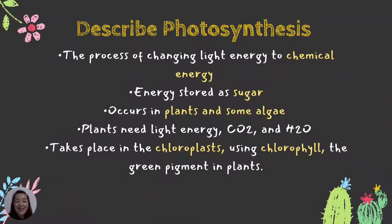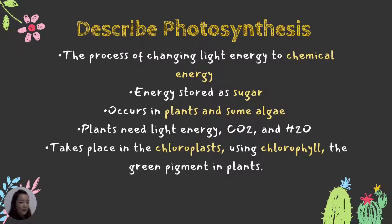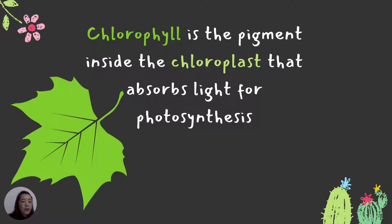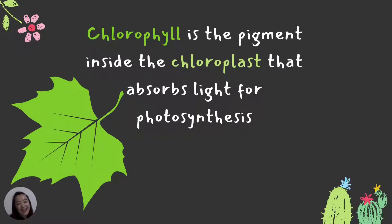Chlorophyll is the green pigment in plants — that is why we see the color of plants as green, because of the presence of chlorophyll. The chlorophyll is the pigment inside the chloroplasts that absorbs light for photosynthesis. During daytime there is light, and the chlorophyll's job is to absorb light energy from the sunlight.